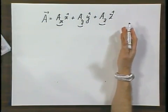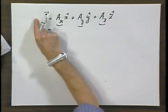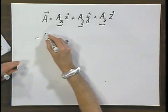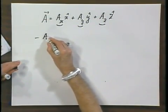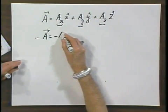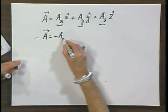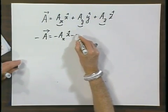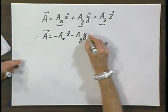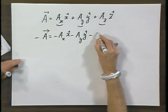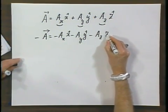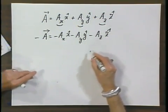If you want to know what minus A is, you multiply left and right with a minus sign. So you get minus A equals minus A of X, X-hat, minus A of Y, Y-hat, minus A of Z, Z-hat.